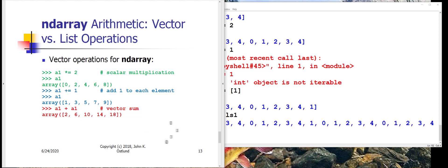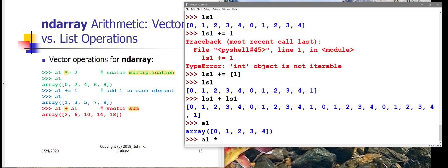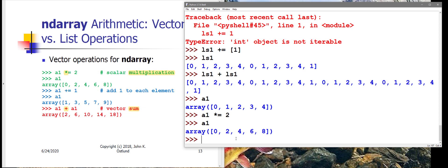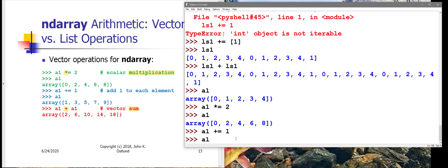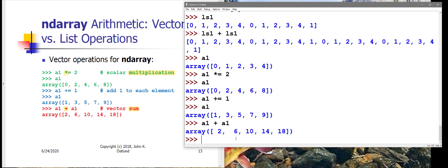The ndarray, on the other hand, treats star as actual multiplication and plus as vector-oriented addition. So the behavior is quite different for ndarrays. Here's our ndarray A1. If I say A1 times-equals 2, instead of repeating the contents of that array twice, I literally get that array multiplied. Each of its items gets multiplied by 2. This is like a scalar multiplication times a vector. If I say A1 plus-equals 1, this is actually scalar addition. It adds 1 to each item in the array. So when I display A1 now, I've got 1, 3, 5, 7, 9. And A1 plus A1 is vector addition. So 2, 6, 10, 14, 18 is the result that I get there.